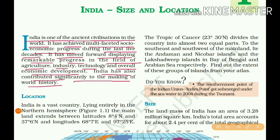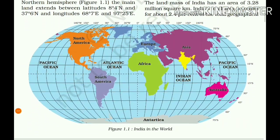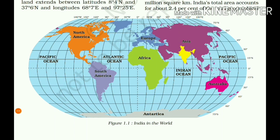The next subtopic is Location. India is a vast country lying entirely in the northern hemisphere. The mainland extends between latitudes 8°4'N and 37°6'N, and longitudes 68°7'E and 97°25'E.